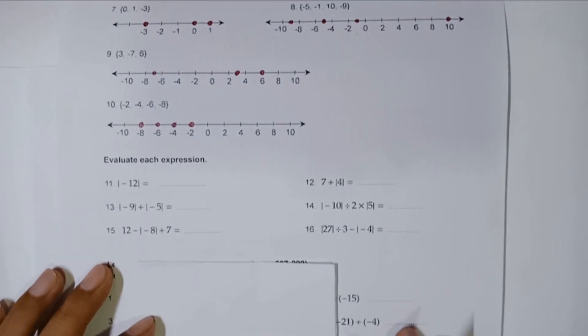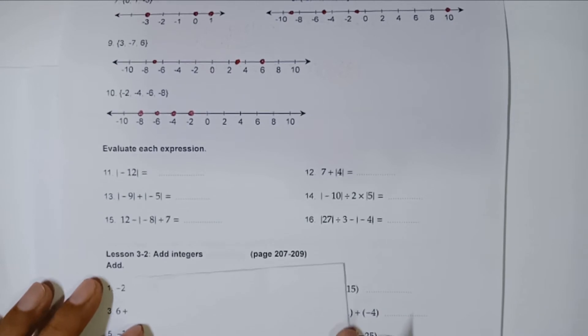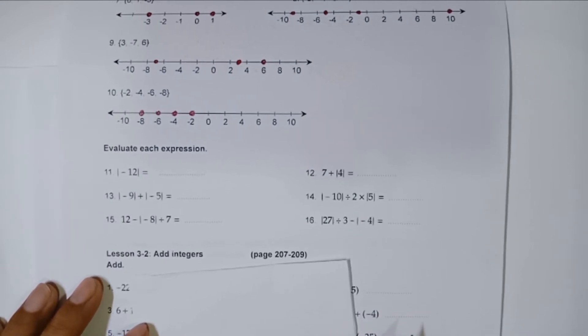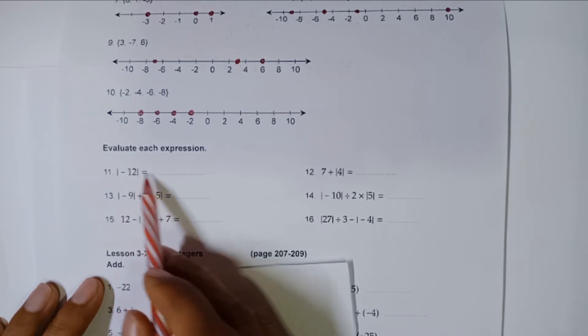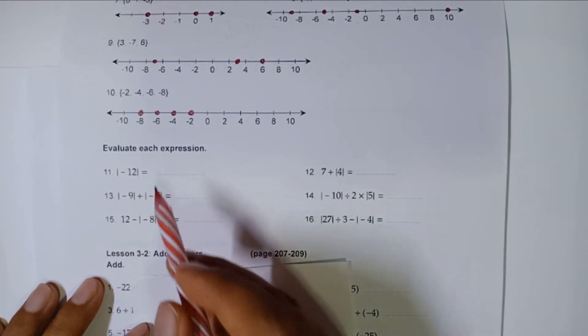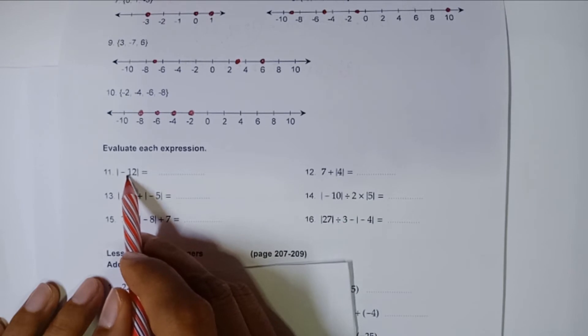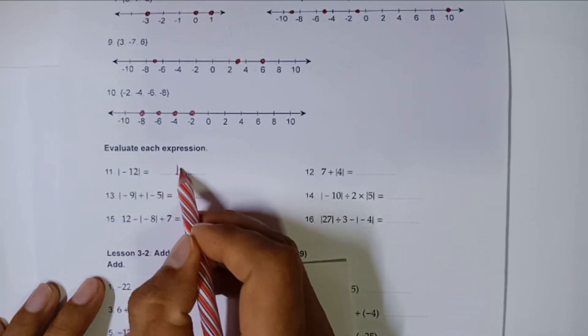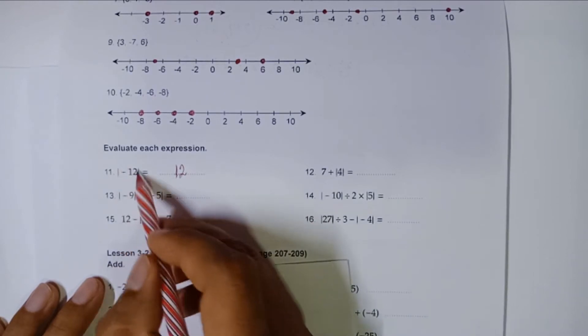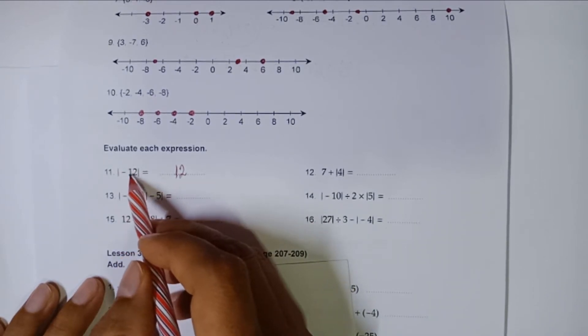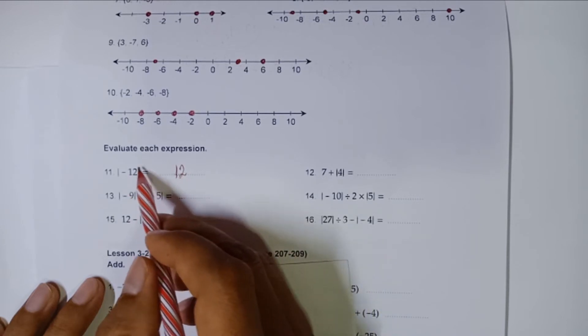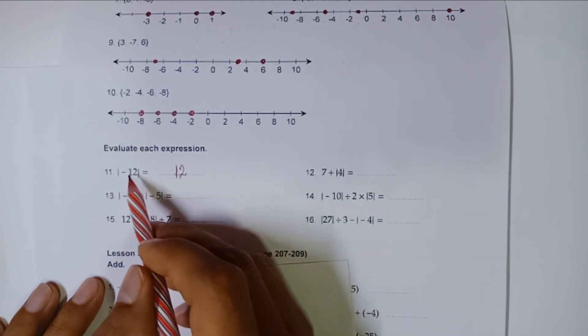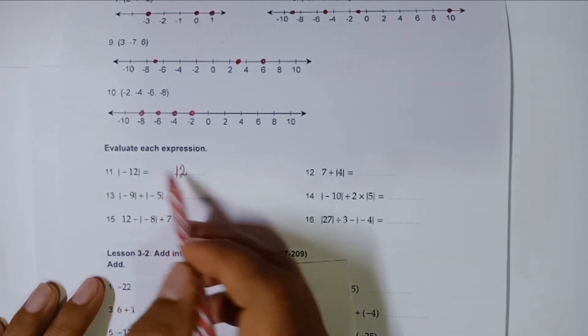Now evaluate each expression. We are working with absolute value. So any number within this absolute value will yield a positive number. For example, in this case, negative twelve will become twelve. That's what we mean by absolute value. Any number inside here, positive or negative, will always be positive once you get it out of the absolute value sign. So this is negative twelve, but with the absolute value sign it becomes twelve.